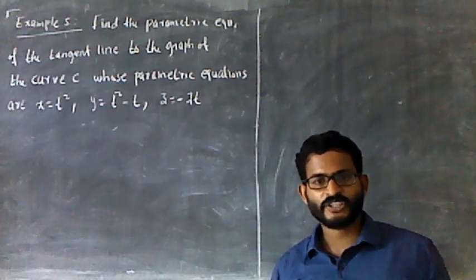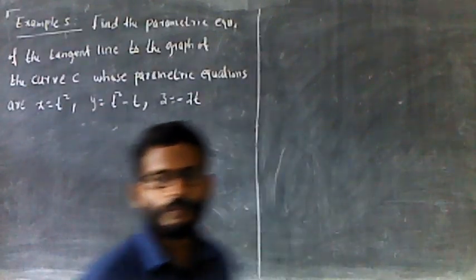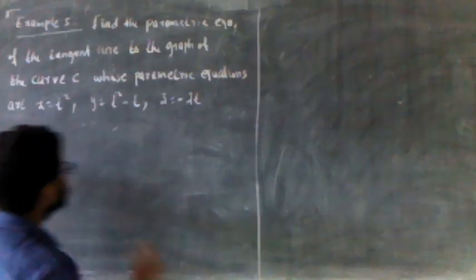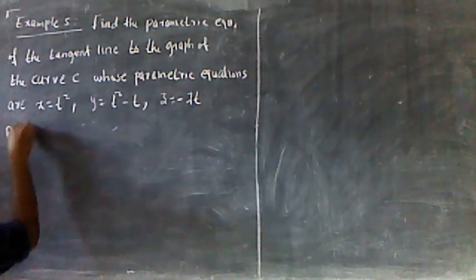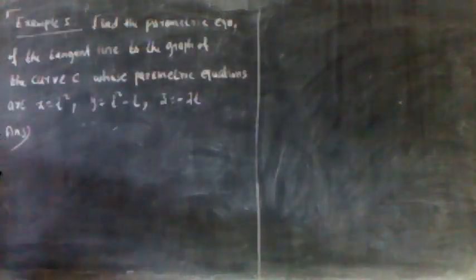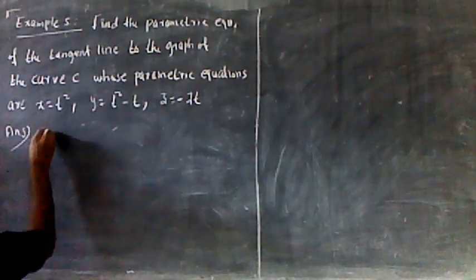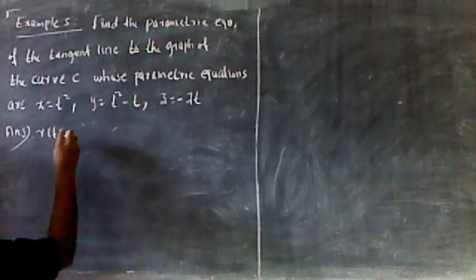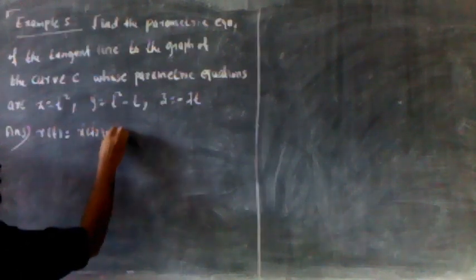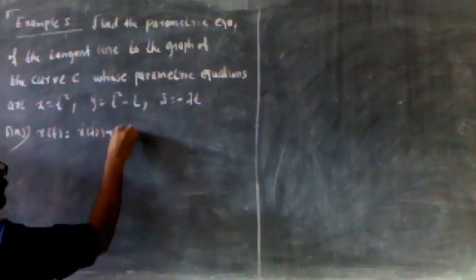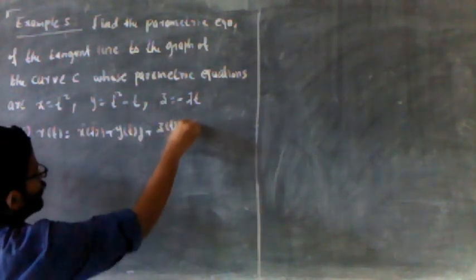The other vector value function is r. R is equal to the solution: r equals x of i plus y of j plus z of k.